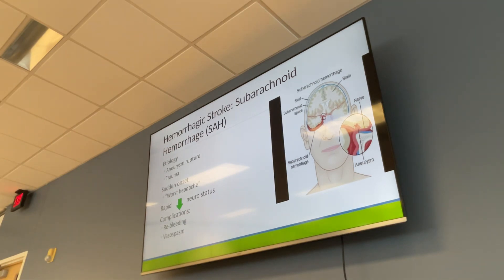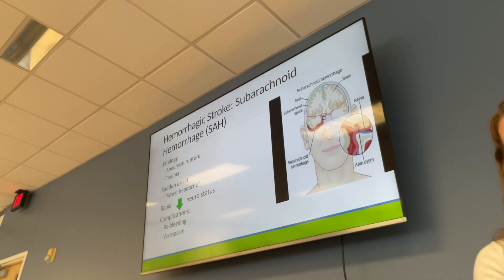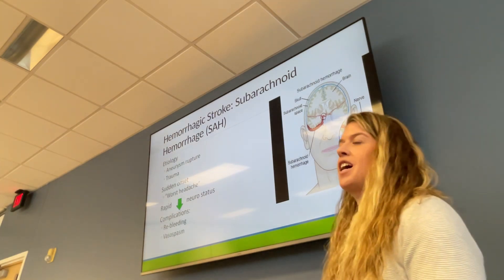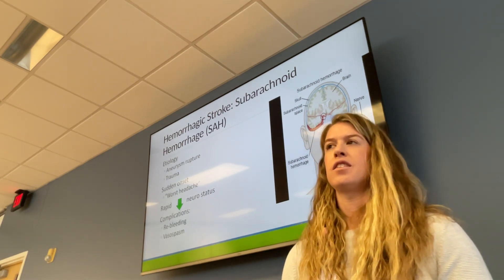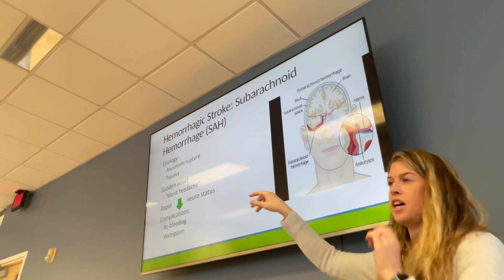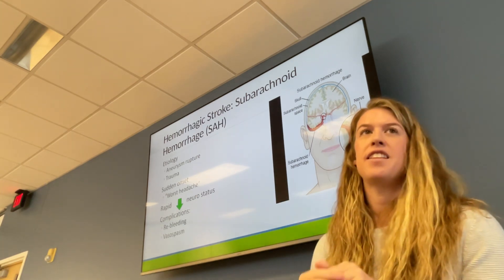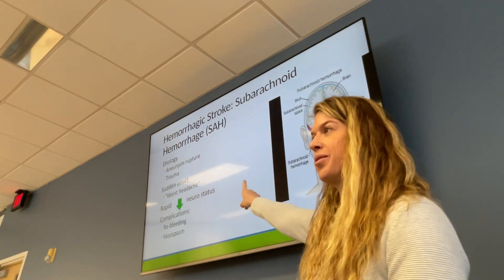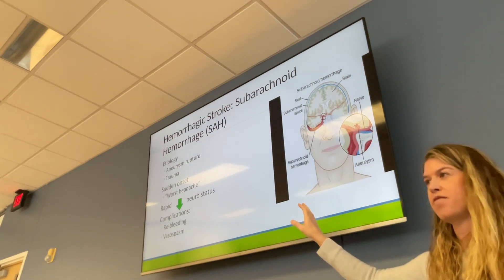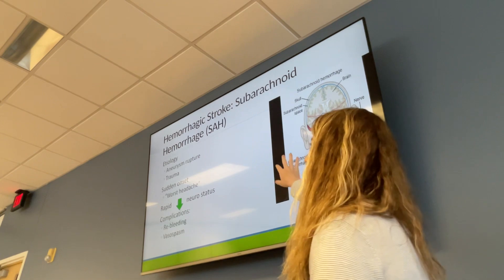Subarachnoid hemorrhage often results from a cerebral aneurysm rupture and can be triggered by trauma or illicit drug use. It is sudden onset with no warning signs. The hallmark symptom is 'the worst headache of my life.' In the ED, this must be taken seriously — any patient reporting the worst headache of their life should be evaluated for hemorrhagic stroke, ruling it out with imaging and assessing for other signs and symptoms.